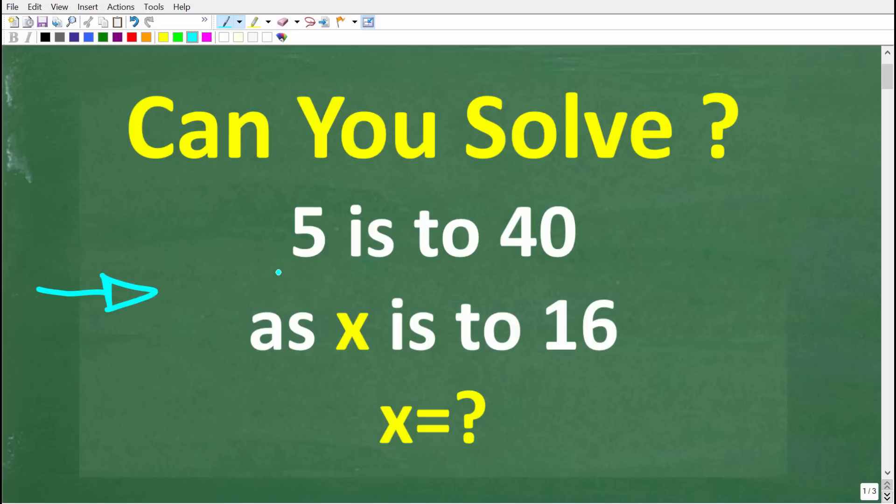So we have 5 is to 40 as x is to 16. So we're trying to figure out what x is equal to. Now, feel free to use a calculator, but if you think you know the answer, put that into the comment section. I'm going to show you the correct solution in just one second. And of course, I'm going to solve this problem step by step. I'm also going to quickly review what a ratio is, what a rate is, and what a proportion is.